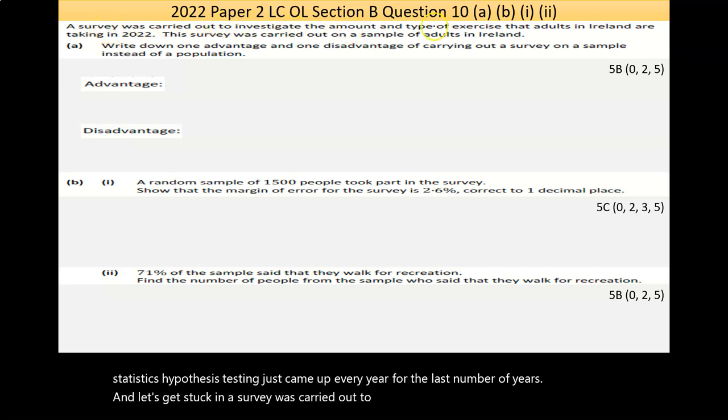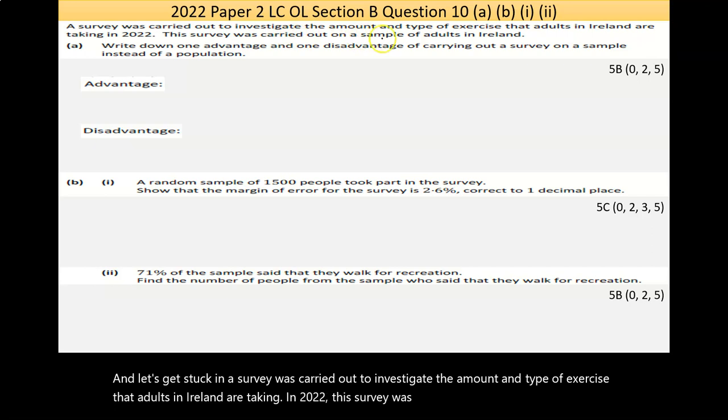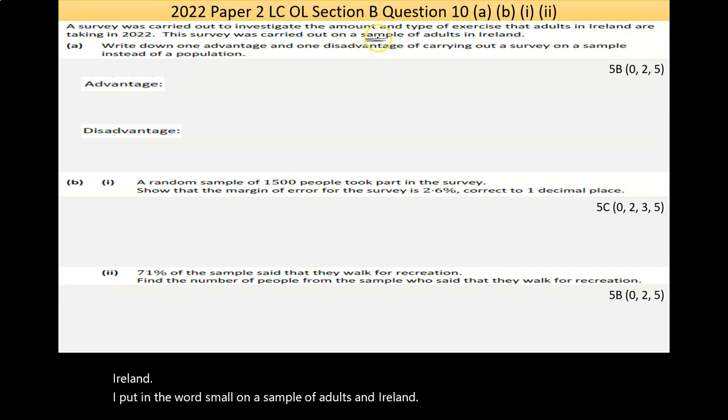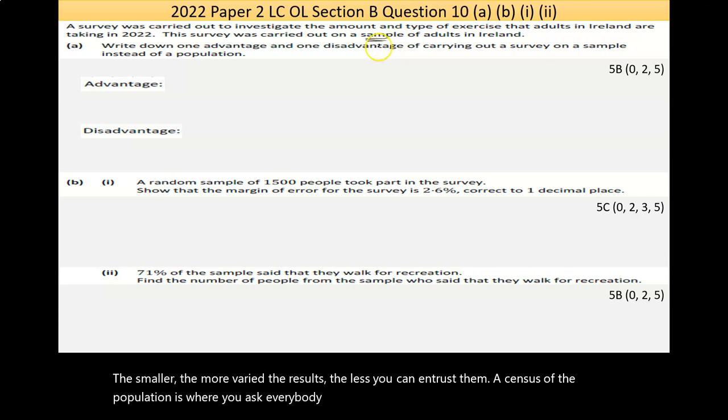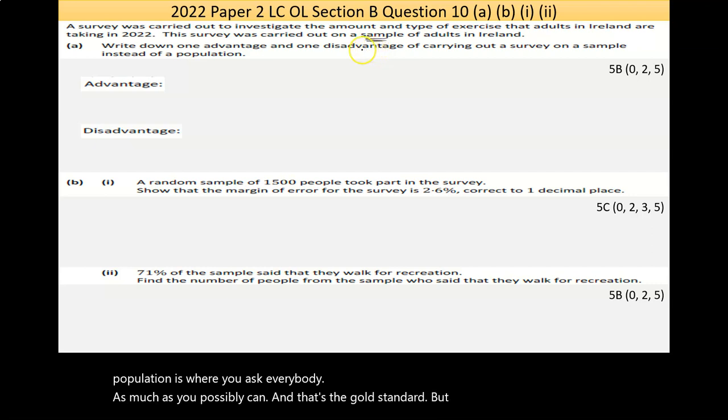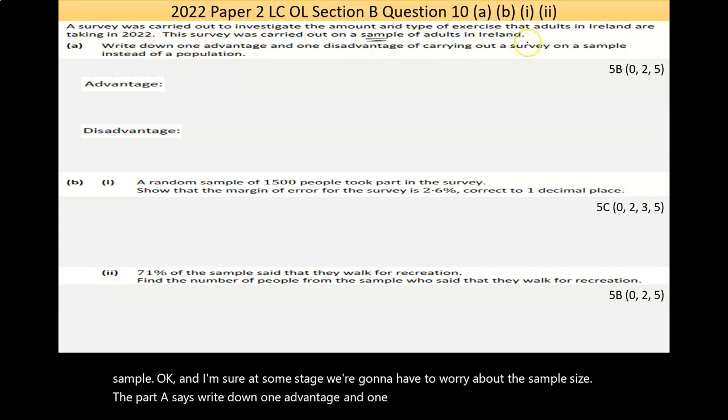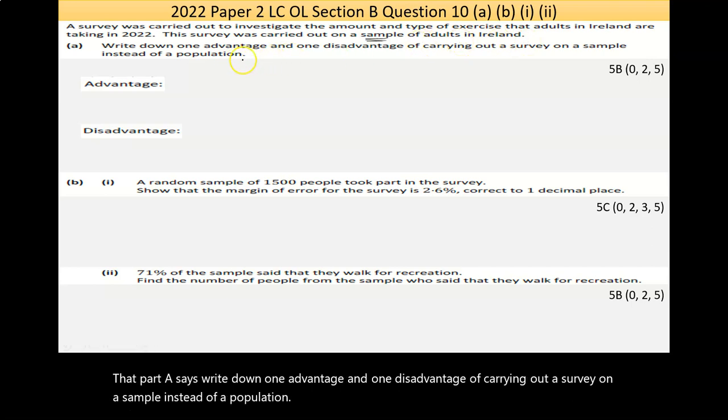A survey was carried out to investigate the amount and type of exercise that adults in Ireland are taking in 2022. This survey was carried out on a sample of adults in Ireland. The reason I'm saying that is a sample is, by its very nature, the smaller the sample, the more varied the results, the less you can entrust them. Part A says, write down one advantage and one disadvantage of carrying out a survey on a sample instead of a population.